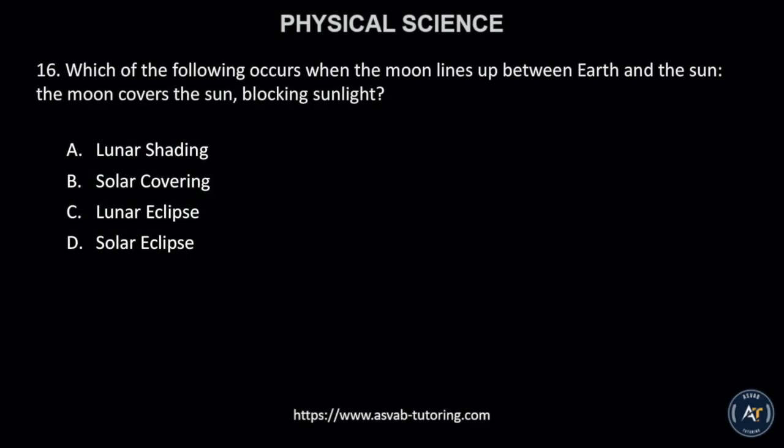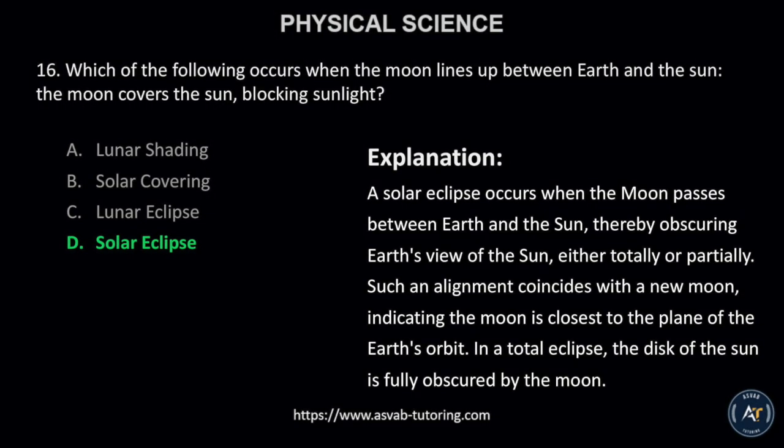Number 16. Which of the following occurs when the moon lines up between Earth and the sun, the moon covers the sun, blocking sunlight? A. Lunar shading, B. Solar covering, C. Lunar eclipse, or D. Solar eclipse. The correct answer is D. Solar eclipse.